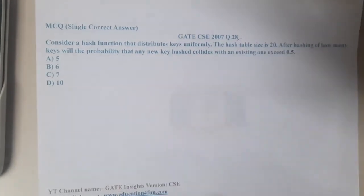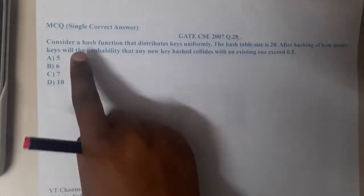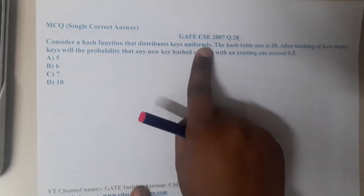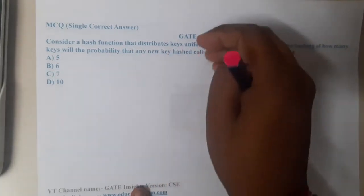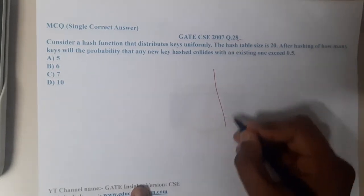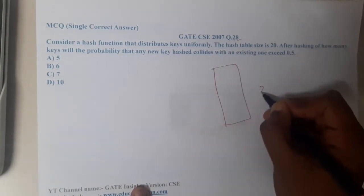This is GATE CSE 2007 question number 28. Consider a hash function that distributes keys uniformly. The hash function has a total table size of 20.